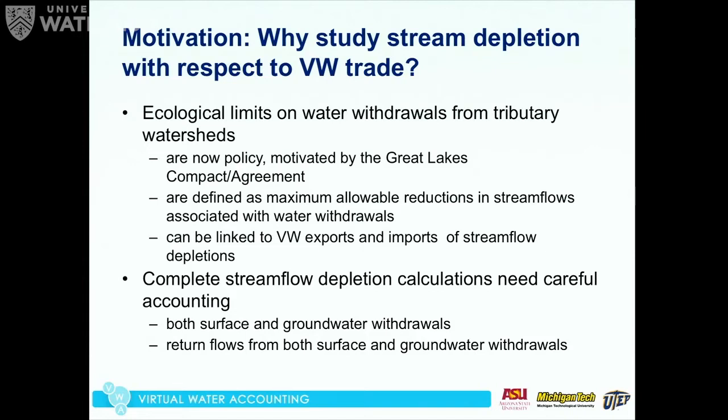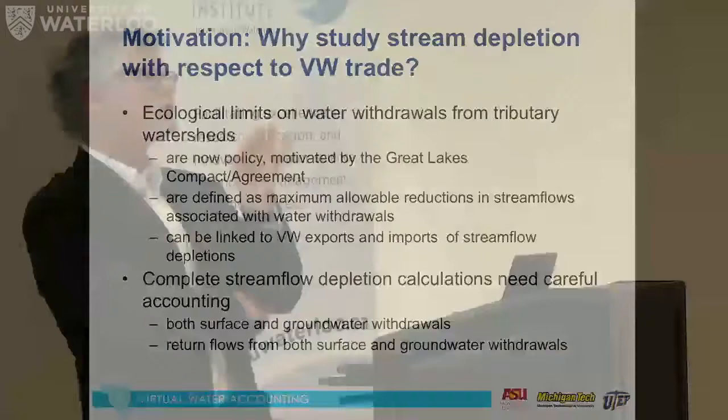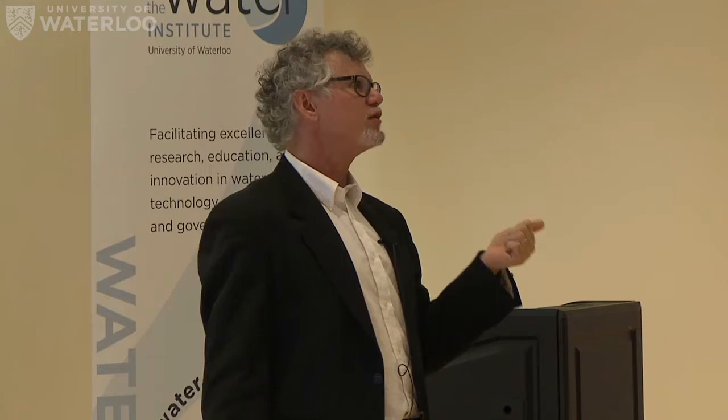For example, only 10% during a low-flow month can be taken from cool transitional streams. We kind of joke that in Michigan we have small cool streams where the depletion limit is very small, and large warm rivers where you can take almost as much as you want. In the small streams we have trout; in the large streams we have fish that nobody seems to care about. The trout lobbies were very instrumental at putting these stream depletion limits in.